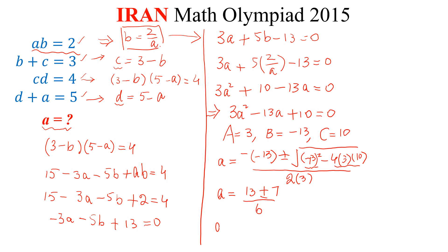So, A equals 13 plus 7 by 6, which is 20 by 6, and A equals 13 minus 7 by 6, which is 6 by 6. We get A equals 10 by 3, which simplifies to 10 over 3, and A equals 1. So A equals 1 or A equals 10 over 3, and this is the required solution to this question.